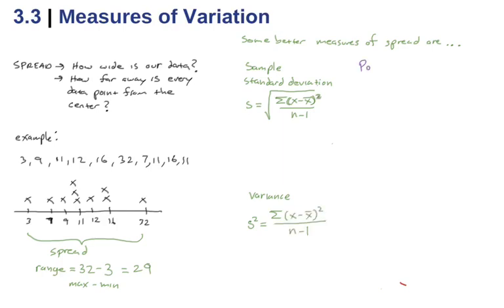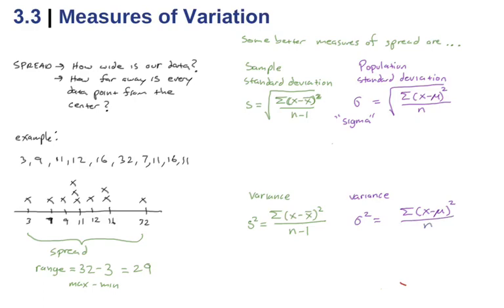For the variance it's exactly the same thing but without the square root. We're also going to talk about the population standard deviation. We're using a Greek letter sigma to denote that we're talking about the population here. It's going to be exactly the same thing but instead of dividing by n minus 1 we're going to divide by n. The variance is going to be sigma squared, same exact formula but we're just dividing by n without the square root.